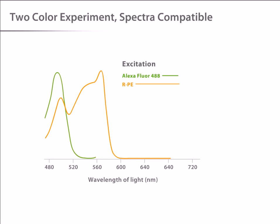What if we want to do a two-color experiment? We need to look at the spectra of the two fluorophores to see if they are compatible. Alexa Fluor 488 and Phycoerythrin, or R-PE, are commonly used together.